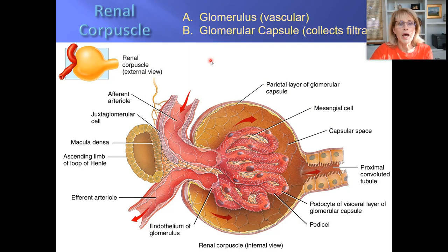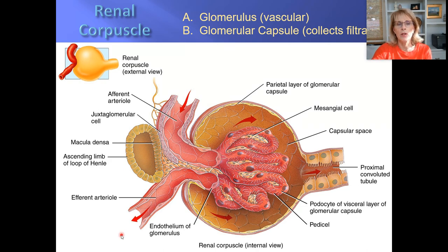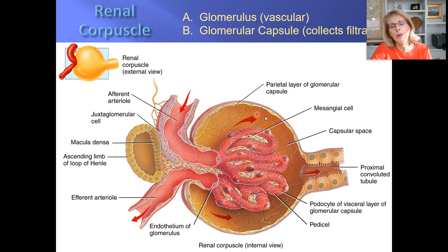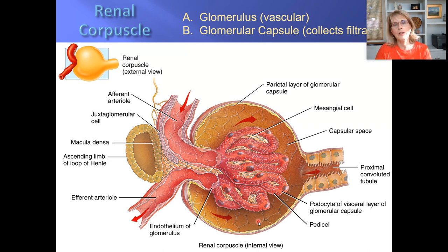The afferent arteriole has a bigger diameter than the efferent arteriole. The afferent arteriole sends blood into the glomerulus; the efferent arteriole takes blood out. The fluid gets squeezed out — just the watery part of the plasma springs out through little holes and is captured by Bowman's capsule, giving us filtrate. Filtrate is almost identical to plasma — basically plasma that's missing the large proteins albumin, fibrinogen, and antibodies.